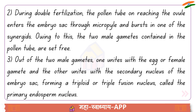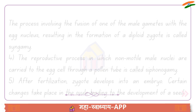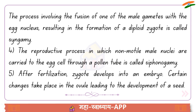Out of the two male gametes, one unites with the egg or female gamete, and the other unites with the secondary nucleus of the embryo sac, forming a triploid or triple fusion nucleus called the primary endosperm nucleus. The fusion of one male gamete with the egg nucleus results in the formation of a diploid zygote.